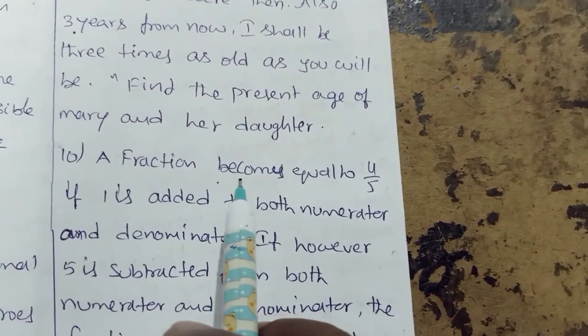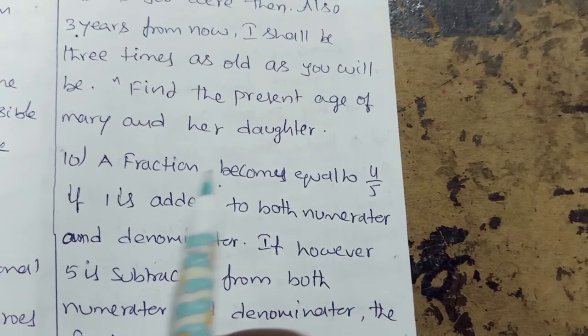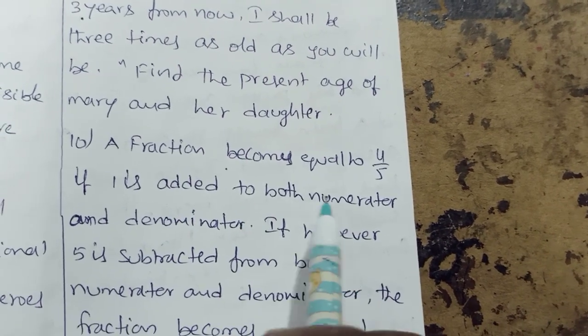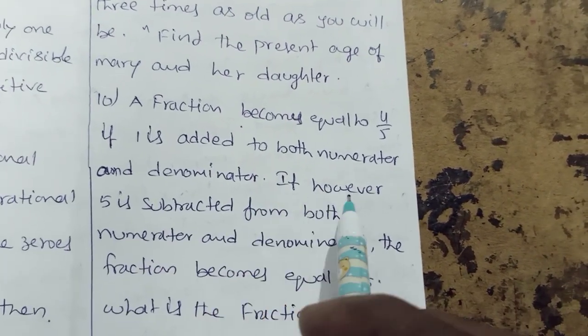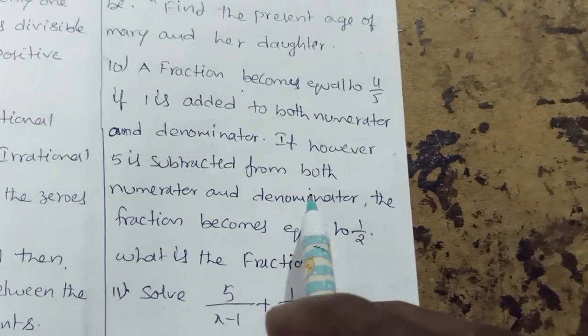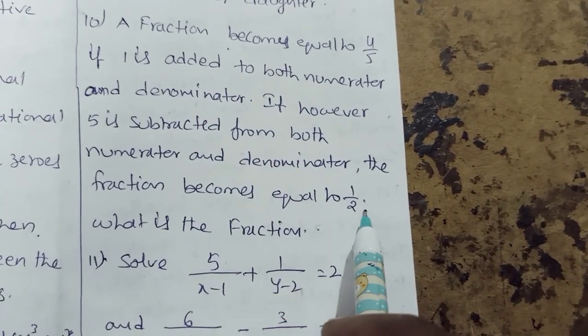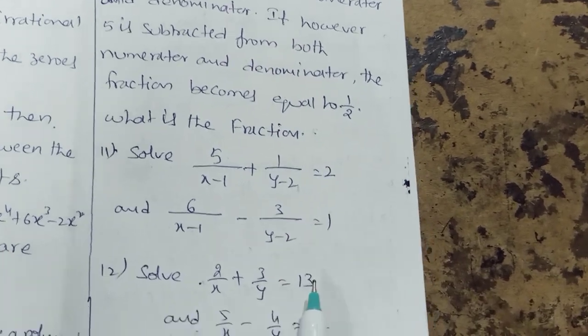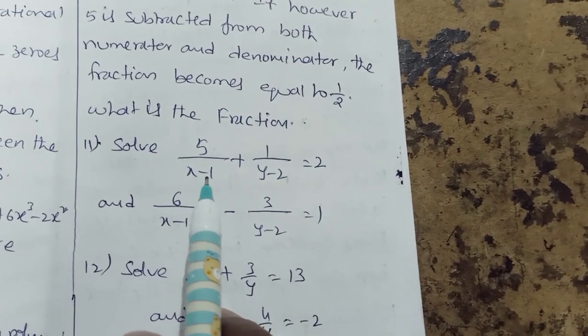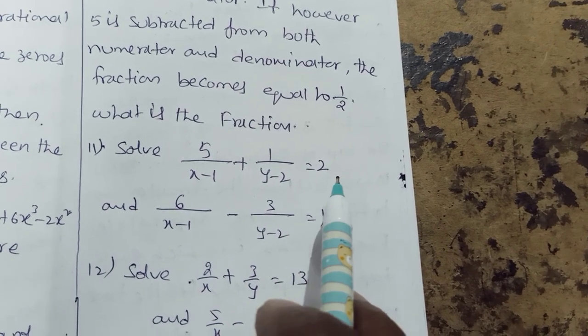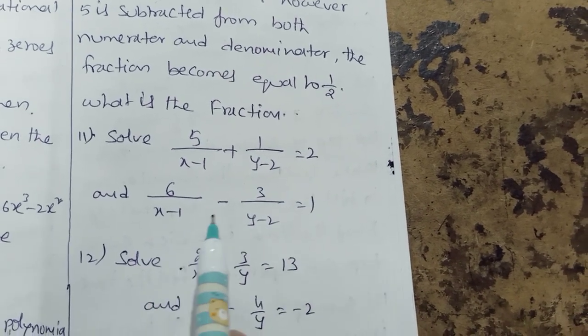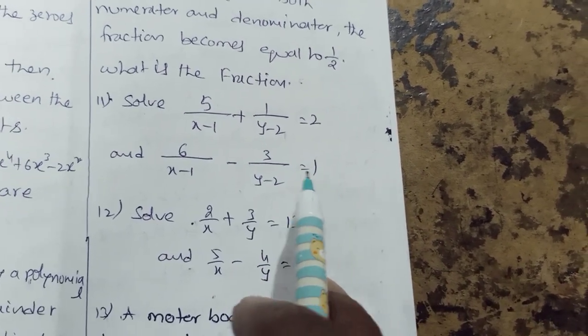A fraction becomes equal to 4 by 5 if 1 is added to both numerator and denominator. If however 5 is subtracted from both numerator and denominator, the fraction becomes equal to 1 by 2. What is the fraction? Solve: 5 by X minus 1 plus 1 by Y minus 2 is equal to 2, and 6 by X minus 1 minus 3 by Y minus 2 is equal to 1.